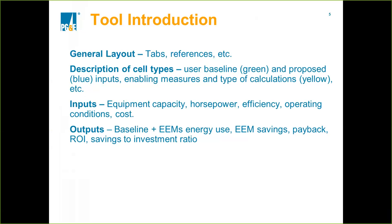There are different cell types: the green cell type means it's a baseline operating condition cell; if it's blue, it's a proposed input; and if it's yellow, it can mean two different things — either you are enabling a measure to see how much energy savings it can provide, or you are choosing the type of calculation. There are two types of calculations: 'detail,' which requires more information from the engineer, and 'simplified,' which requires simpler inputs for smaller projects or when you don't have a lot of information and just want to get a sense of the potential savings for certain measures.